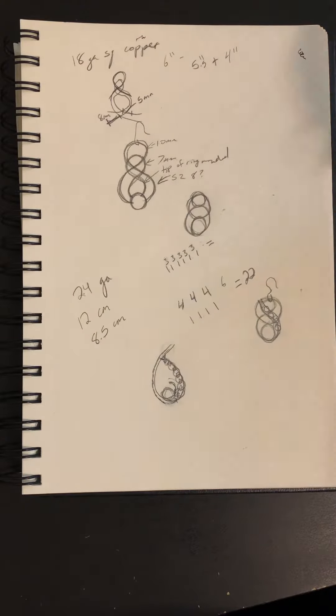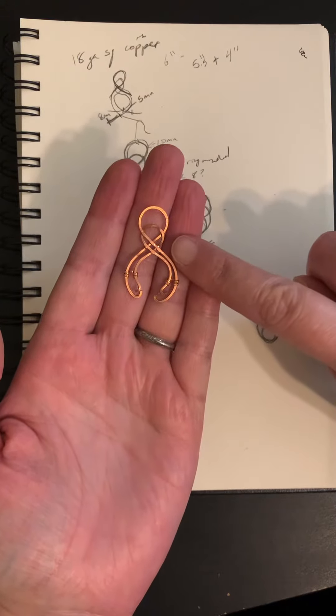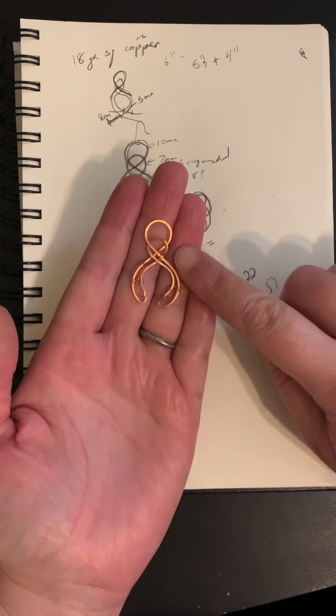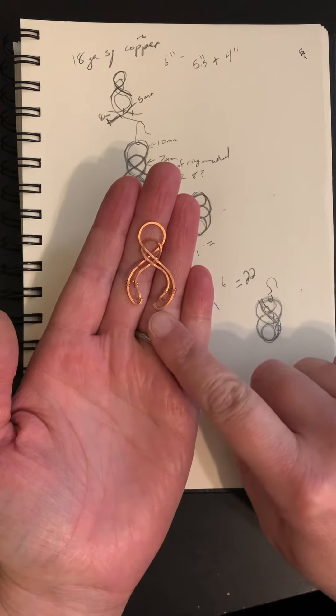So then I made my first prototype out of copper. This one you can see that I've got the top pretty well finalized. I like how that looks. And then I started trying to stabilize the bottom. I wanted to get a stone in here too.